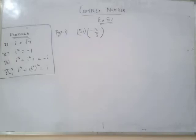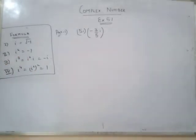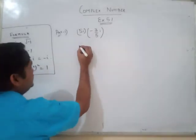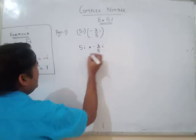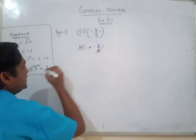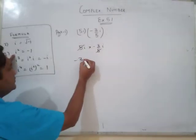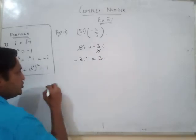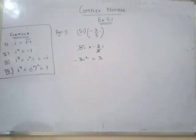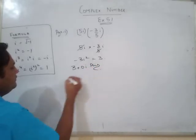Looking at the first question: it is 5 iota multiplied by minus 3 by 5 iota. You can solve this using the formula. 5 iota into minus 3 by 5 iota gives iota times iota, which is iota squared equals minus 1. That means we are left with 3. But the question asks us to write in the form of a plus iota b, so the first answer is 3 plus iota times 0, i.e., 3.